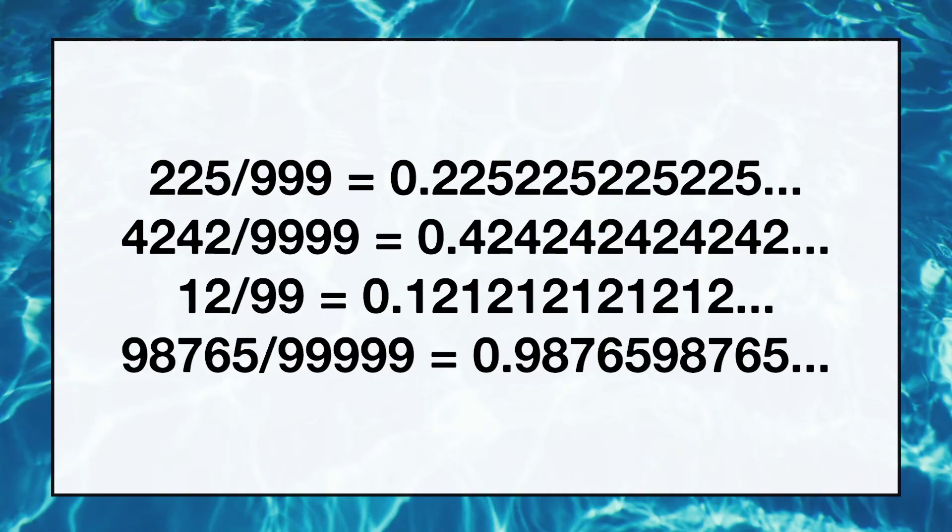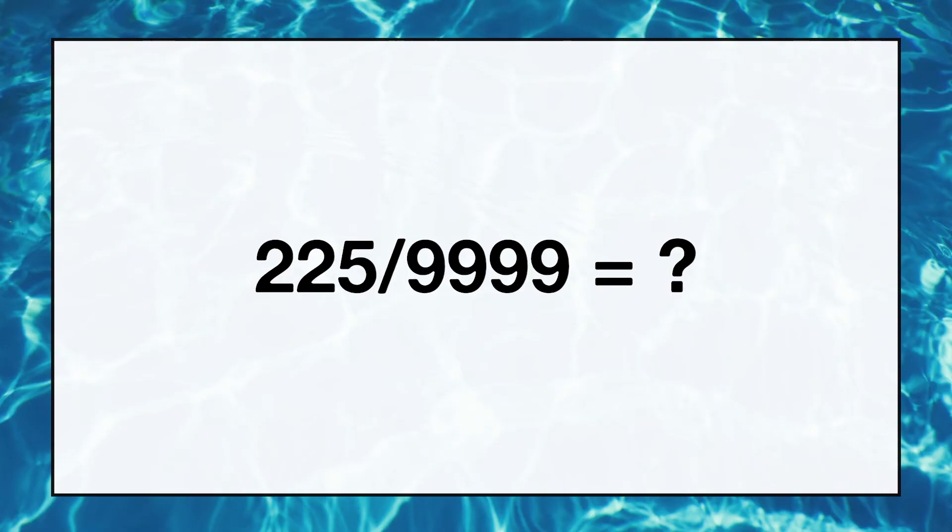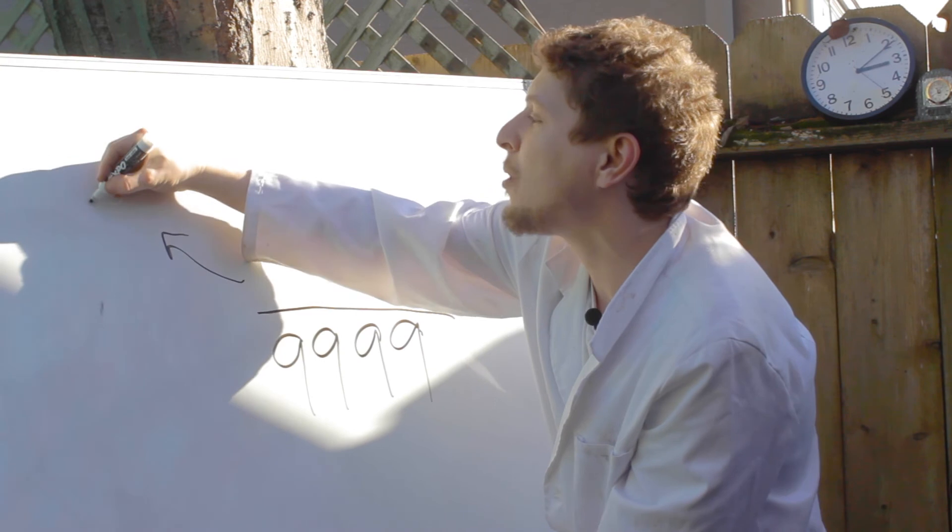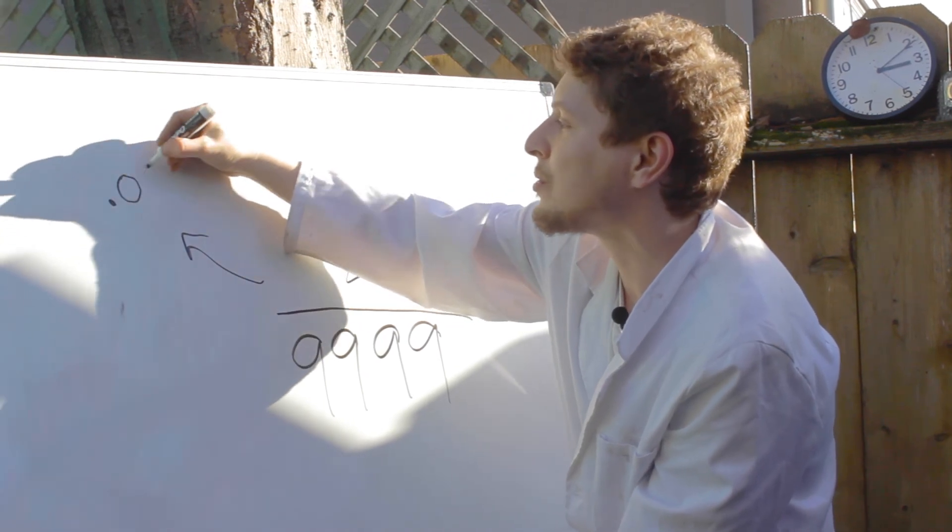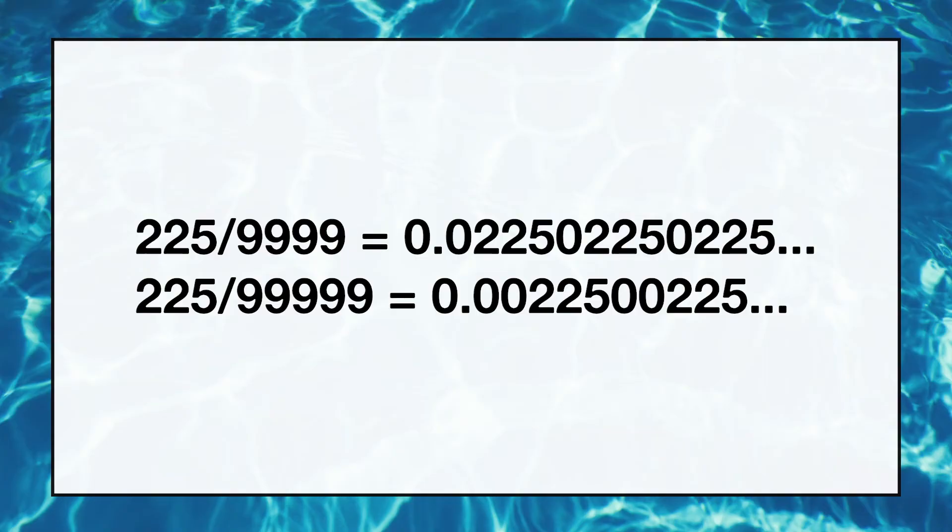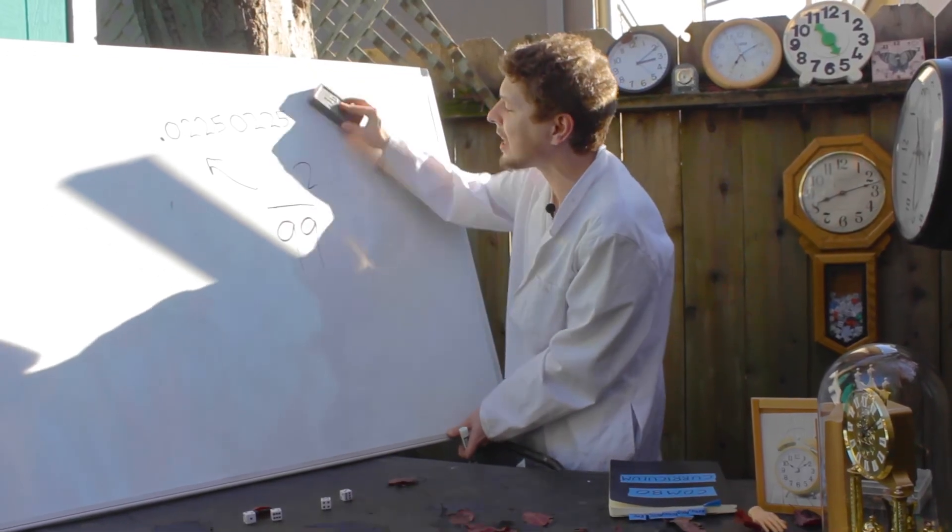You will always get a repeating decimal with exactly that number infinite times. Me and my cameraman Aaron here saw that it appears that if you take any number, like let's go back to the 225 we did, and divide it by more nines, all it ends up doing is putting zeros in between the repeated strings of numbers.